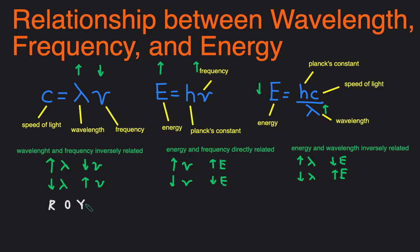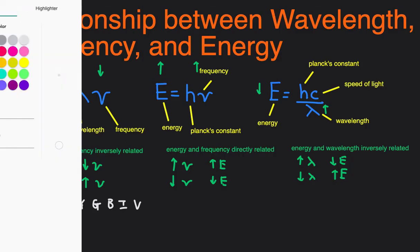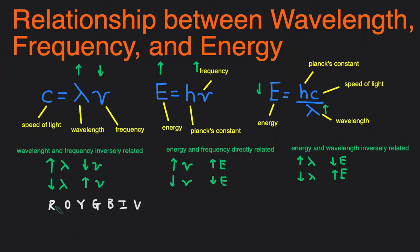So red, orange, yellow, green, blue, indigo, and violet. Red is usually around 700 nanometers — that's its wavelength — and violet is typically around 400 or so. So we can draw an arrow going this way, showing that the wavelength increases in the direction of red.